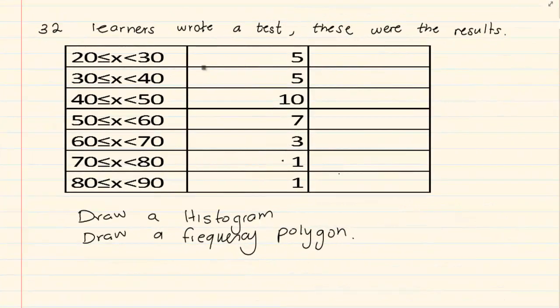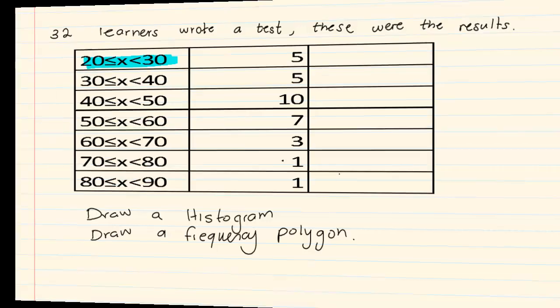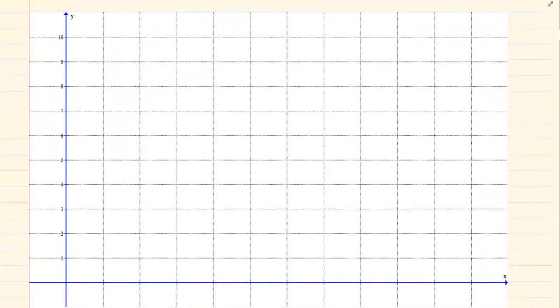When we are drawing a histogram we still have the values to where it is going up to. So if you take 20 to 30, we are still going to mark that it's going up to 5. The difference is how we mark these. So what we are going to do is at the bottom here, each bar will be given its limit.